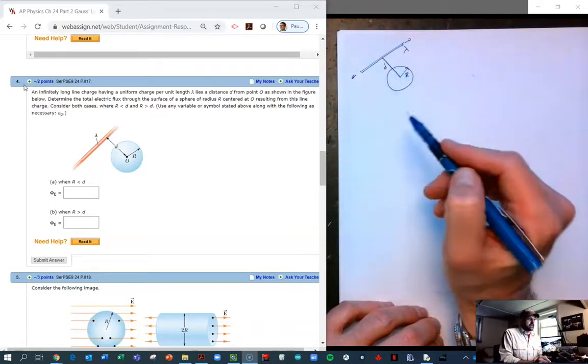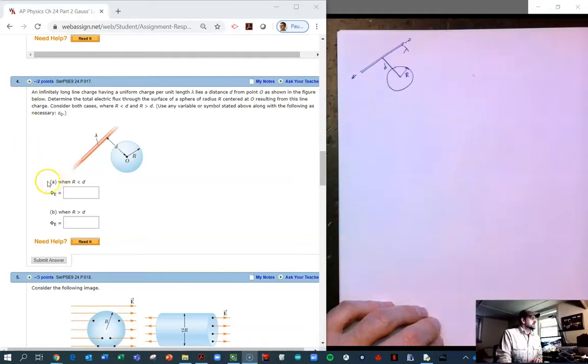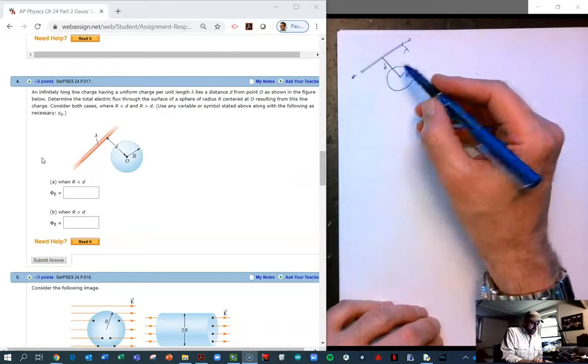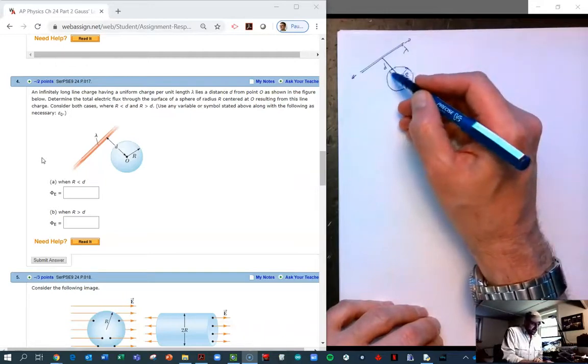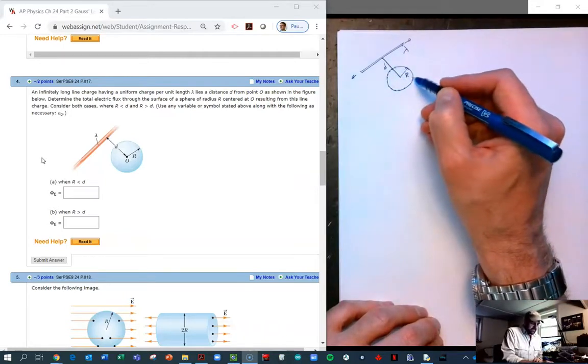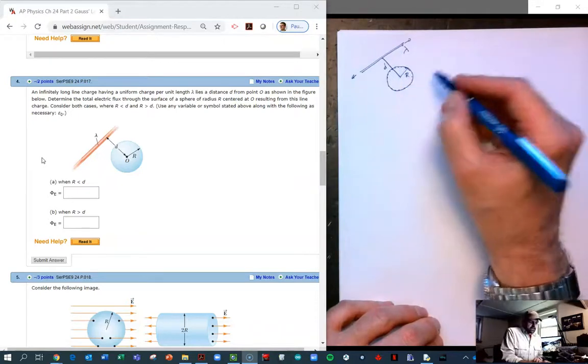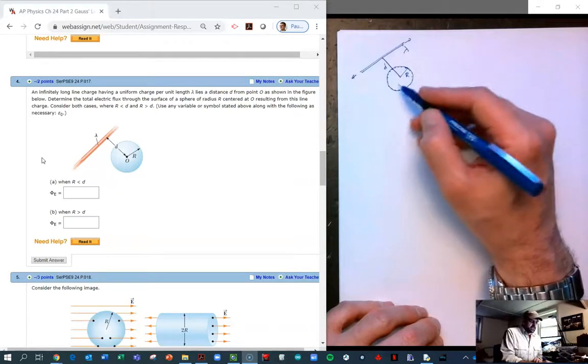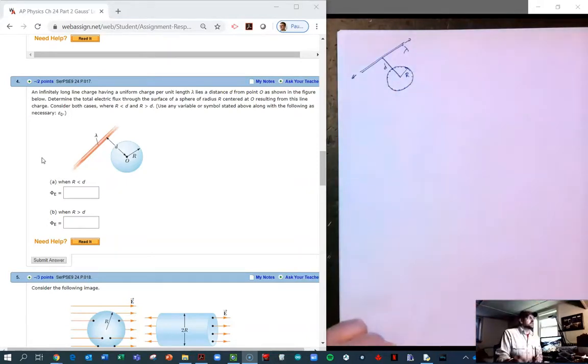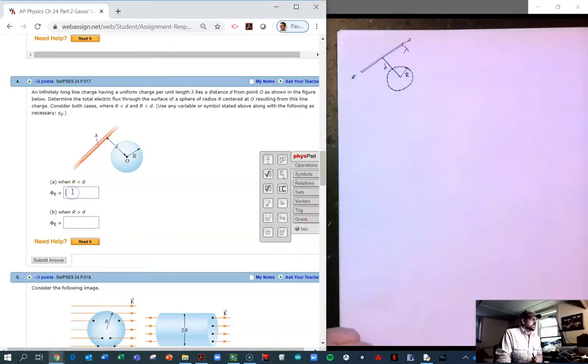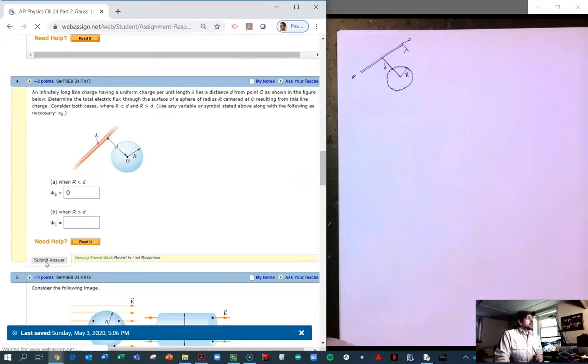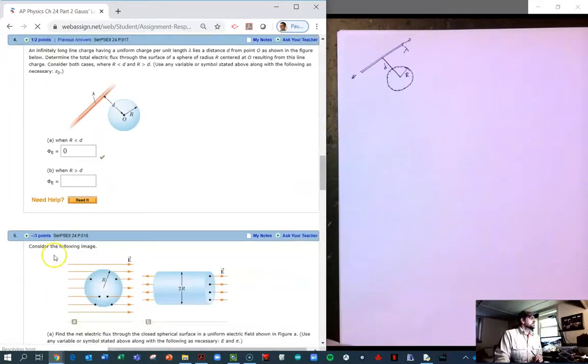So let's take care of the R smaller than D first. This is number A. Well this is pretty simple. If we consider a Gaussian surface to be our sphere itself, then the flux is simply - one way to find the flux is simply to find the charge enclosed. And because there's no charge enclosed in that sphere when it's small, that flux should be zero. So if we submit our answer, cross our fingers, hope that physics works. It does.